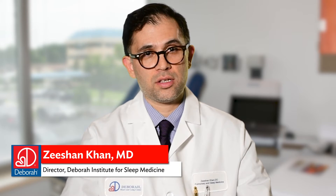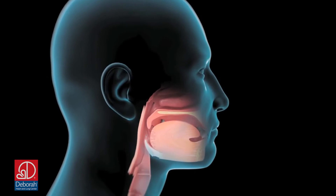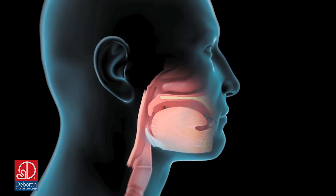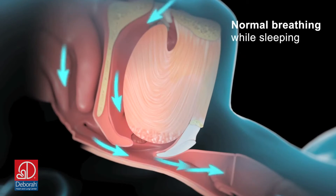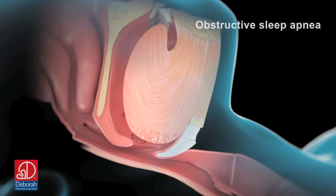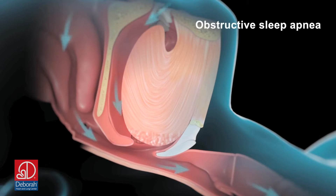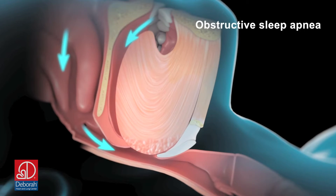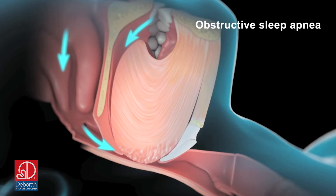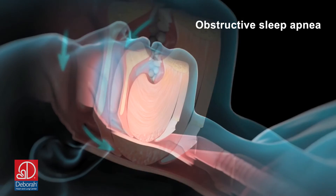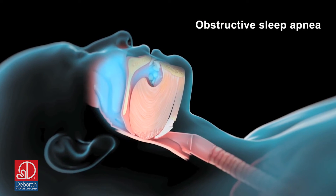Obstructive sleep apnea is the narrowing of the upper airway. When that happens, you're not getting good flow of oxygen from your mouth into your lungs and then to your heart and other vital organs, which can obviously put a lot of stress on your heart due to the lack of oxygen.